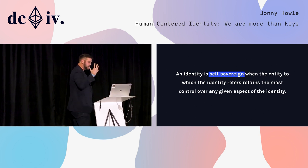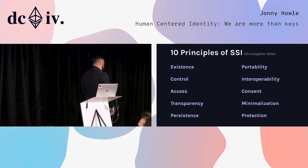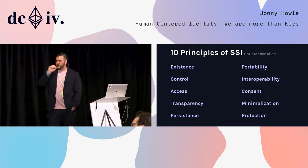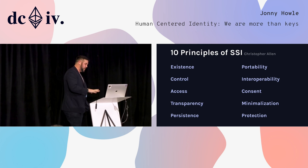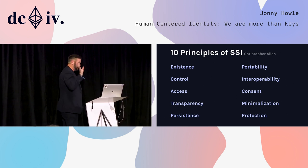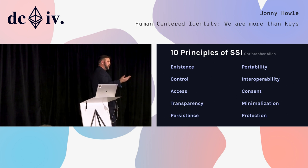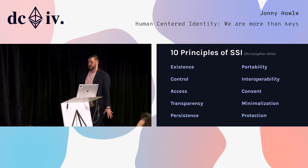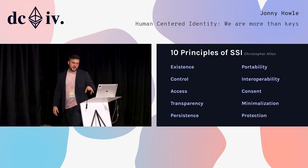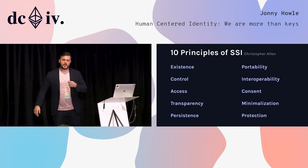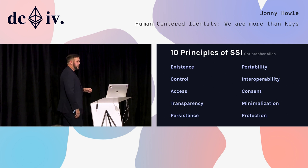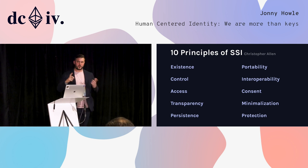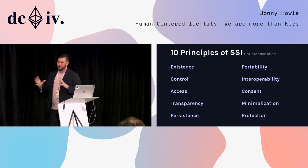There are principles put forth by identity researcher Christopher Allen. Bitcoin and Ethereum address and fulfill some of these principles in different ways. The last two — minimalization and protection — are largely what this talk is about, and they're the critical piece of self-sovereign identity that can make or break the whole thing.